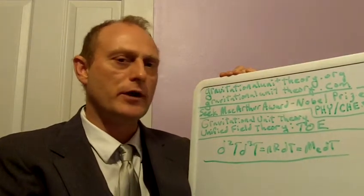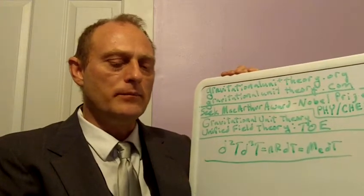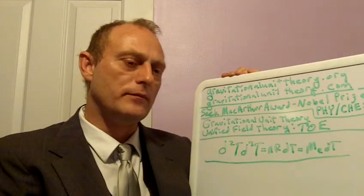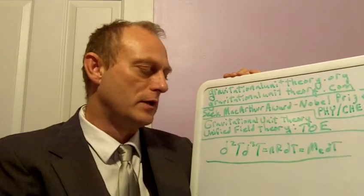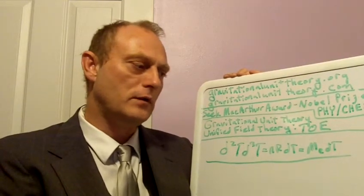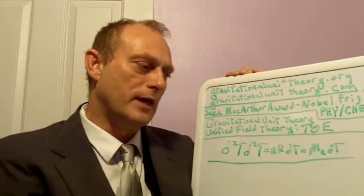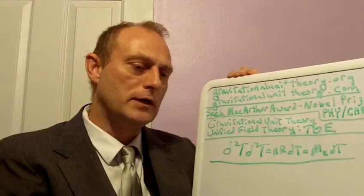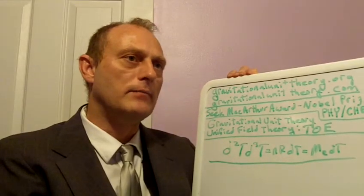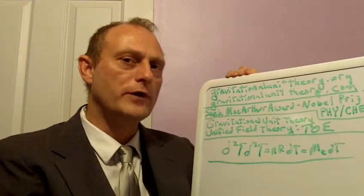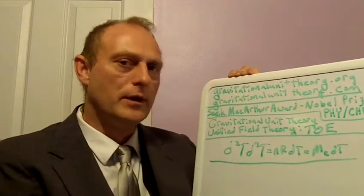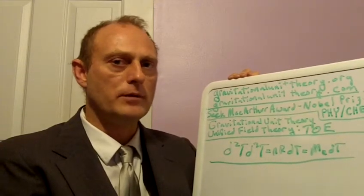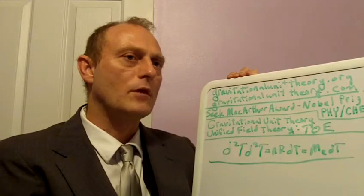It's available at my website gravitationalunittheory.com and also through amazon.com. The mathematical theory of everything that I've derived is d2t times d3t equal nrdt equals a constant mass times dt. What I would like to do is to do a sample problem, which is in the book. I'll use an f of x equation, a t of x equation, to derive a valid set of temperature, pressure, and volume for the first time ever.